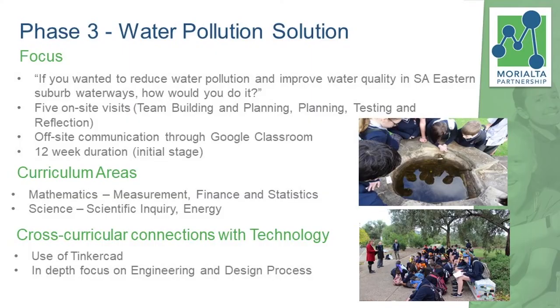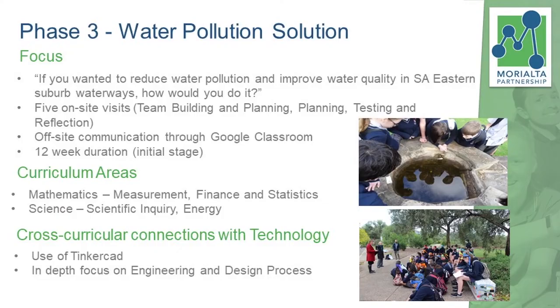Phase 3 is this year. The problem question this time we tried to link back to home — a real-world issue that students are facing right now, localised to where they live. We're in the SA Eastern suburbs, and we gave them the question: if you wanted to reduce water pollution and improve water quality in South Australian Eastern suburb waterways, how would you do it? This time, 12 weeks is our focus for completion of the project — though I'm putting that in brackets as an initial stage, because we want to keep going until we reach a fully tested solution.